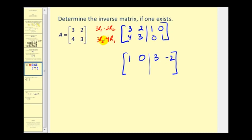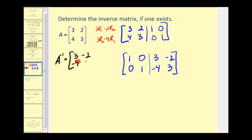For row two: three times four minus four times three is zero. Three times three is nine, minus four times two is eight — nine minus eight is one. Three times zero minus four times one is negative four. Three times one minus four times zero is three. So notice the left side is now the identity matrix, which means the right side is the inverse of matrix A. So A inverse is the matrix: three, negative two, negative four, three.